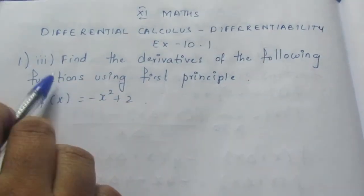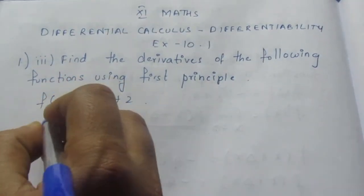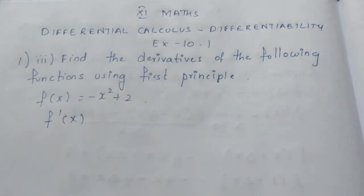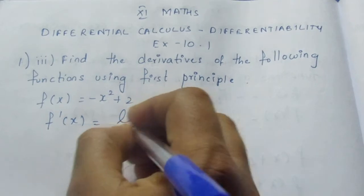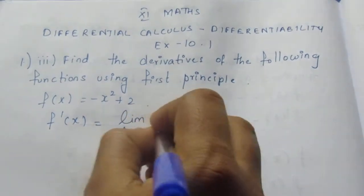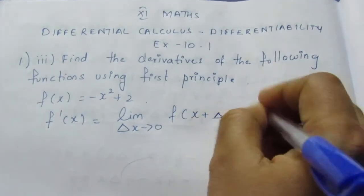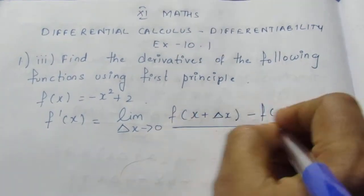For the first two sums, F of x differentiation F dash x equals the formula: Limit delta x tends to 0, F of x plus delta x minus f of x by delta x. This is the formula.